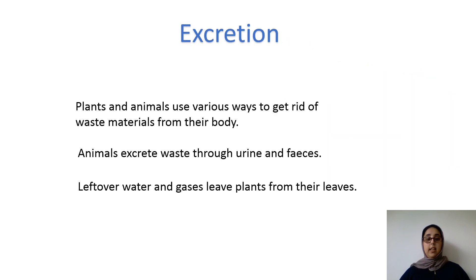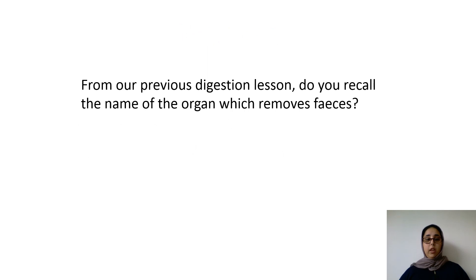Excretion. Plants and animals use various ways to get rid of waste materials from their body. Animals excrete waste through urine and faeces, and leftover water and gases leave plants from their leaves. Faeces is the scientific terminology for poo. From a previous digestive lesson, do you recall the name of the organ which removes faeces? Pause the video and have a think. The answer was the anus. Well done if you got that correct.